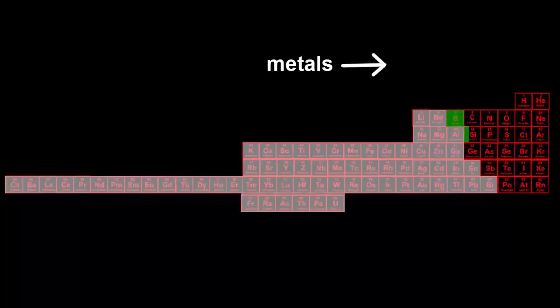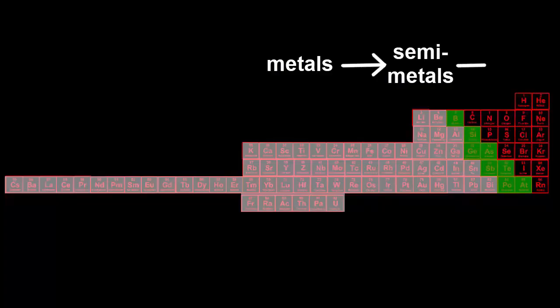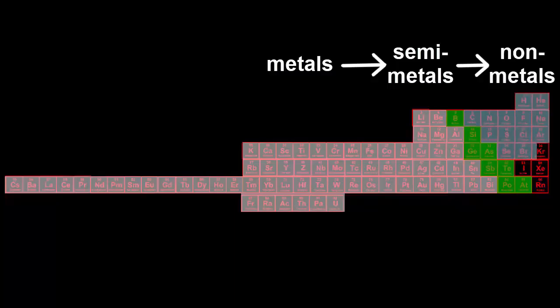Then move to semi-metals in the middle, then finish with non-metals on the right, with the last non-metal being an inert colorless gas.